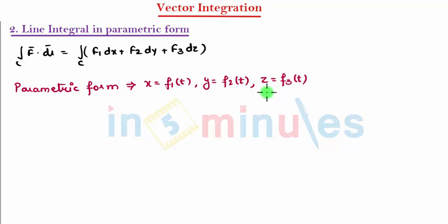That means when these are in a function of t, we need to change x, y, z and r̄ into t coordinates. After that, we will be finding, let's say we get a function φ(t), integration φ(t)dt that will be integrated in limits t₁ to t₂.